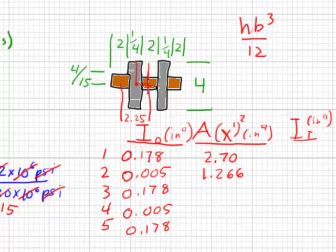Now element 3 has a centroid that is right on the centroidal axis. So its distance to the centroidal axis is 0. So it would simply multiply by 0. 4 and 5 are identical to 1 and 2, 2 and 1 respectively.